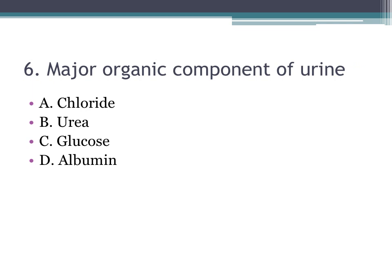Number six: the major organic component of urine. The correct answer is urea. Remember: chloride has an 'i' in its spelling, meaning it is inorganic. Urea is organic. Glucose and albumin are not normally seen in urine. So: urea is organic, chloride is inorganic.